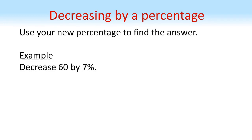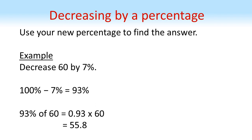Using that trick, if we wanted to decrease 60 by 7%, we now want to find 93% of 60, so 0.93 times 60 gives us 55.8.